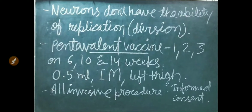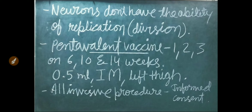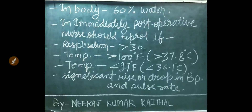Neurons don't have the ability to replicate or divide. The Pentavalent vaccine is given in three doses: first dose at 6 weeks, second dose at 10 weeks, and third dose at 14 weeks of age. The dose is 0.5 ml, given intramuscularly on the left thigh. All invasive procedures need informed consent. Our body's 60% weight is due to water.